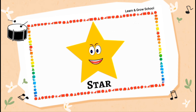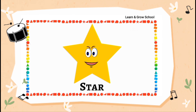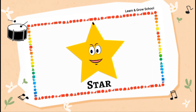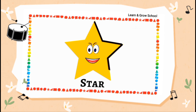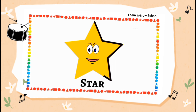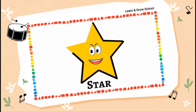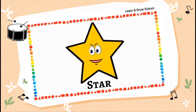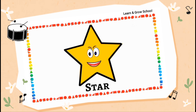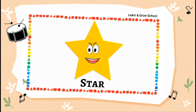Hi, I am a star. Let's move and count my sides: 1, 2, 3, 4, 5, 6, 7, 8, 9 and 10. I am a shape with 10 sides and 5 corners.